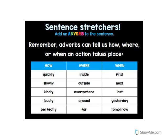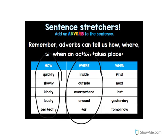Let's add an adverb to sentences. Remember, adverbs can tell us how, where, or when an action takes place. How adverbs include: quickly, slowly, kindly, loudly, perfectly, nicely, rudely. Where adverbs include: inside, outside, everywhere, around, far, nearby, close. When adverbs include: first, next, last, yesterday, tomorrow.